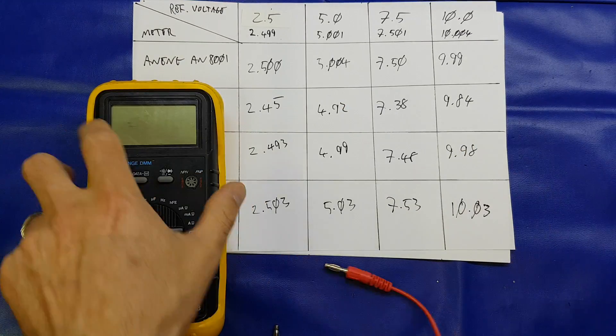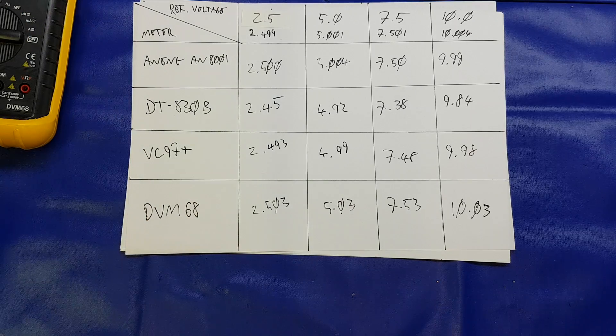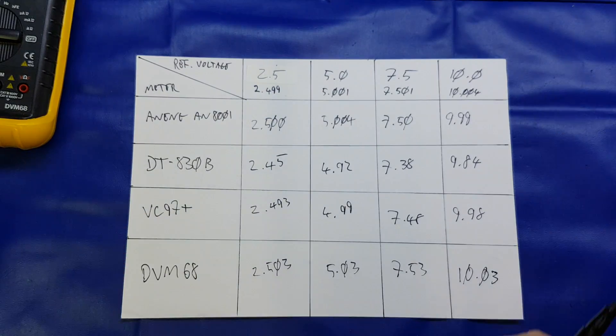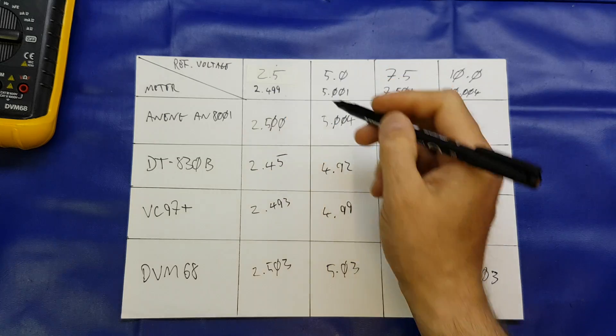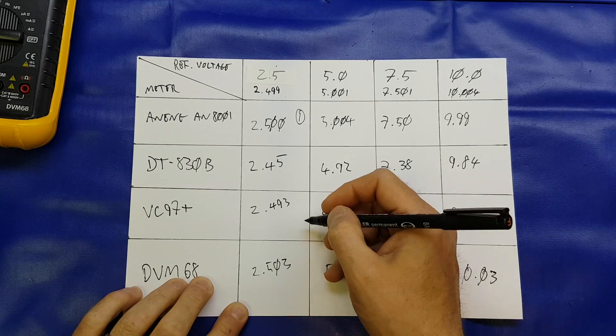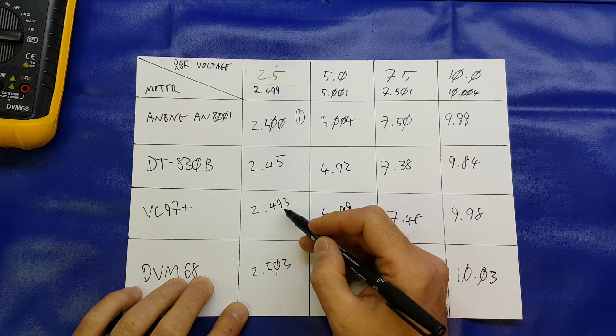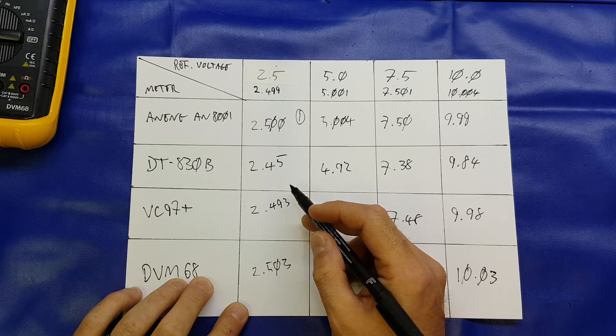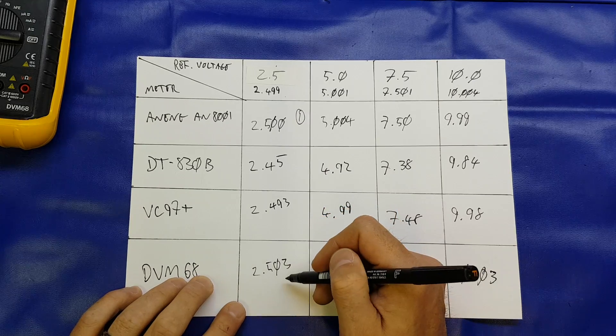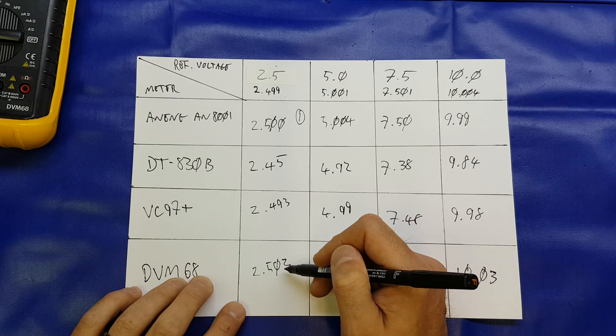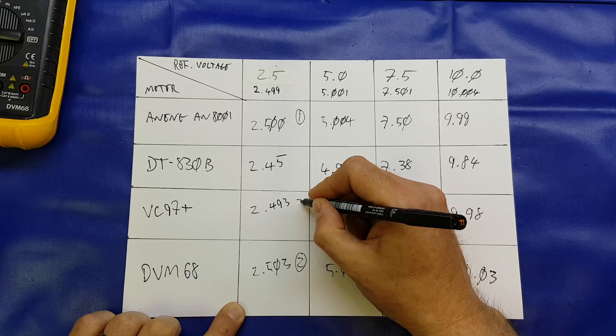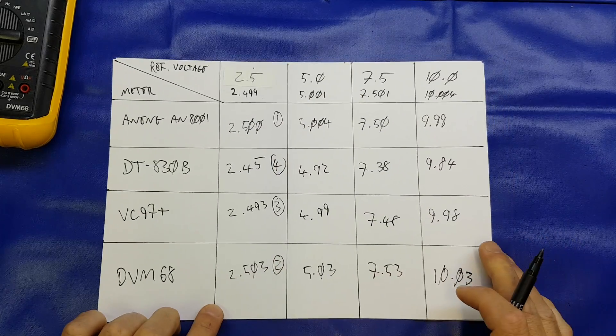And what we're going to do now is basically rank them. Compare the displayed voltage to the reference voltage and work out which is the most accurate across the range. Okay. So, 2.499. Yep. Aneng. Number 1. That's within 0.006. That is 0.004. So that's number two, the old Vellamen, so that was three, that means that the 830 is in the fourth position on that.